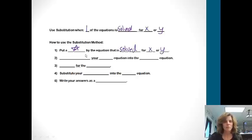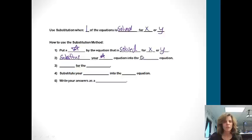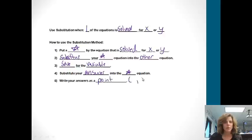That starred equation will be our substitute. Then the next thing we're going to do is substitute our starred equation into the other equation. When we're done with that, we will solve for whatever variable we have. Then we will substitute our answer back into the starred equation and write our answer as a point — something comma something — because we're looking for the point of intersection.